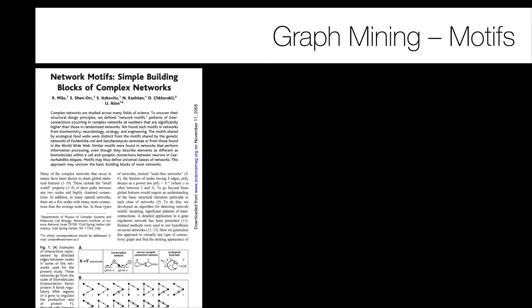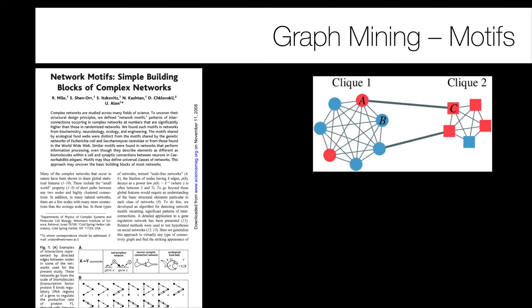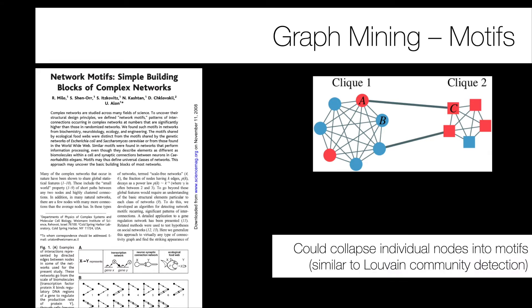Some research around motifs suggests networks don't care about individual nodes, but about these meta-level collections of nodes. If you look at two cliques in a network, you can collapse all elements of clique one and clique two into two nodes — C1 and C2 — and create a weighted edge between them capturing the connections between the cliques. This can significantly reduce the complexity of graphs.